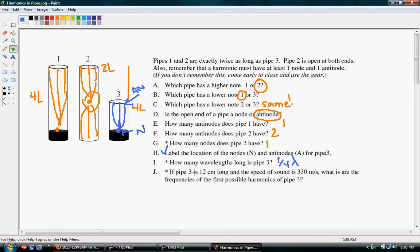Okay, so it says if pipe 3 is 12 centimeters long and the speed of sound is 330 meters per second, what are the frequencies that are possible, the first possible harmonics for pipe 3?